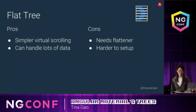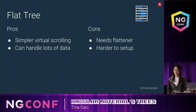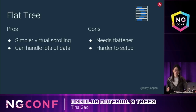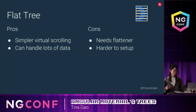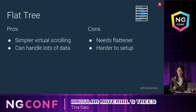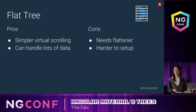Both two types have some pros and cons. The flat tree, because we flatten the hierarchy, an ancestor and all the descendants become siblings in the DOM. So it's easier to add virtual scrolling to the flat tree. It can also handle large amounts of data because we can reuse some DOM elements. However, it needs a flattener to change the hierarchy, so it's one more step to set up.